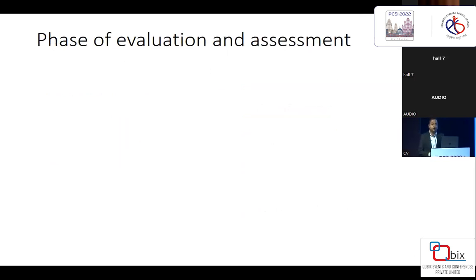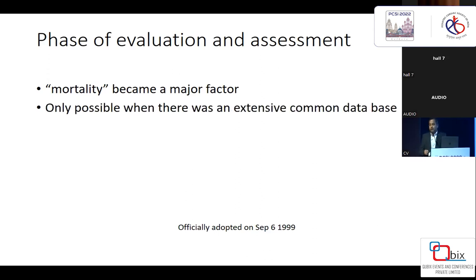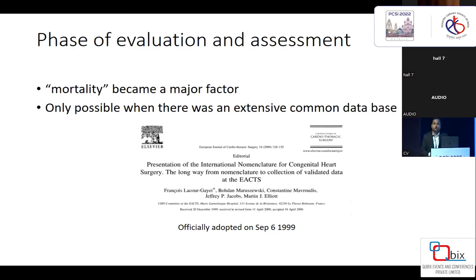So what is the final phase? The final phase is the phase of evaluation and assessment — that is the phase we are in right now, where we are evaluating and assessing ourselves as individual cardiac surgeons or assessing our own units in terms of quality care. The reason we are in this phase is that at some point, mortality became a major factor, with more and more surgeons and pediatric units being compared based on mortality. This is only possible with a common database, which started when the international nomenclature for congenital heart surgery database was officially adopted in 1999, and the phase of evaluation and assessment officially started around 2000.